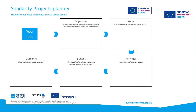So now that the group have identified an issue that affects them, what next? This is where the Solidarity Project Planner comes in. This resource has been specifically developed to help young people create a simple and easy to understand project outline. By completing each area of this planner, the group should have the basis of what will become their application form. There is no specific order in which to complete this resource; the group can work on either side of the planner first. In this webinar we will be working our way through each section, beginning with the objectives box on the left hand side of the page.